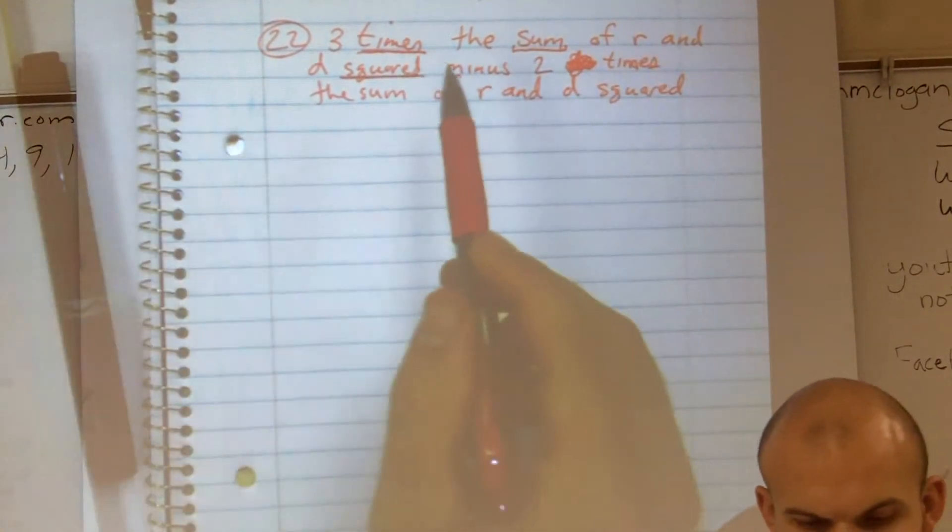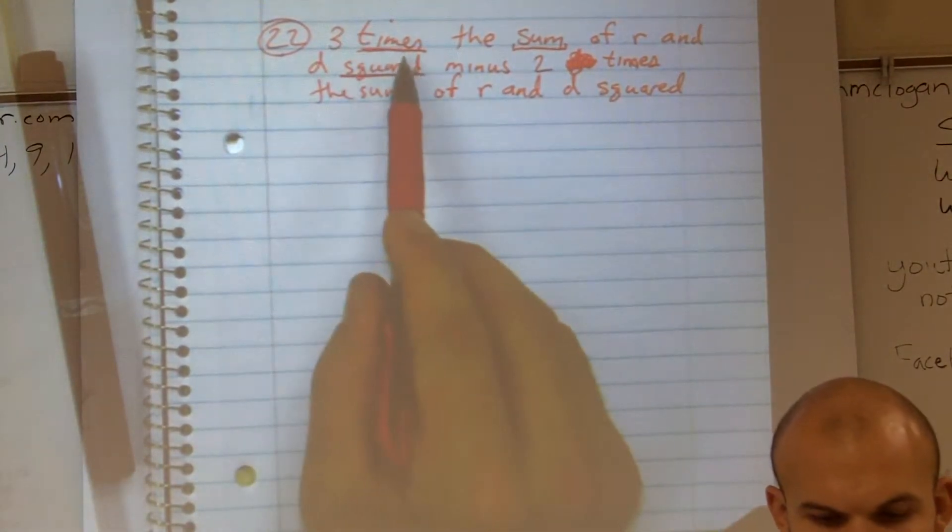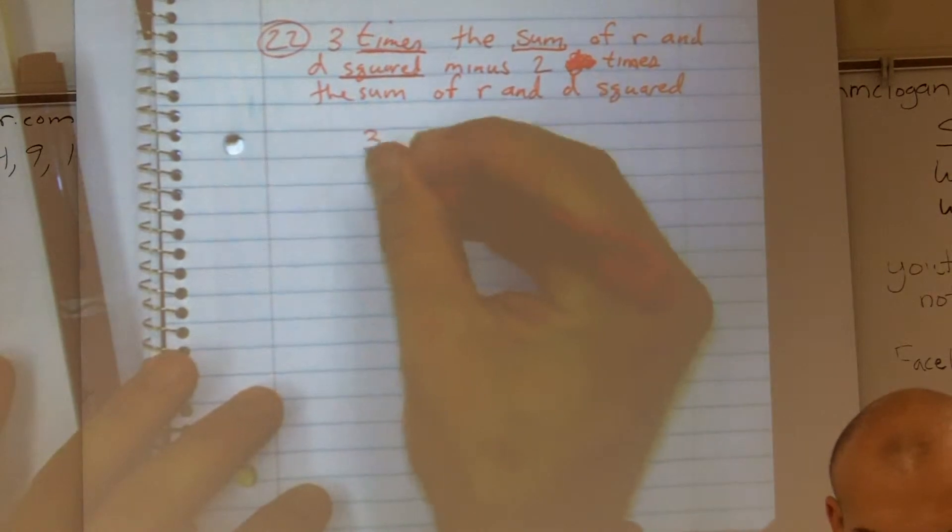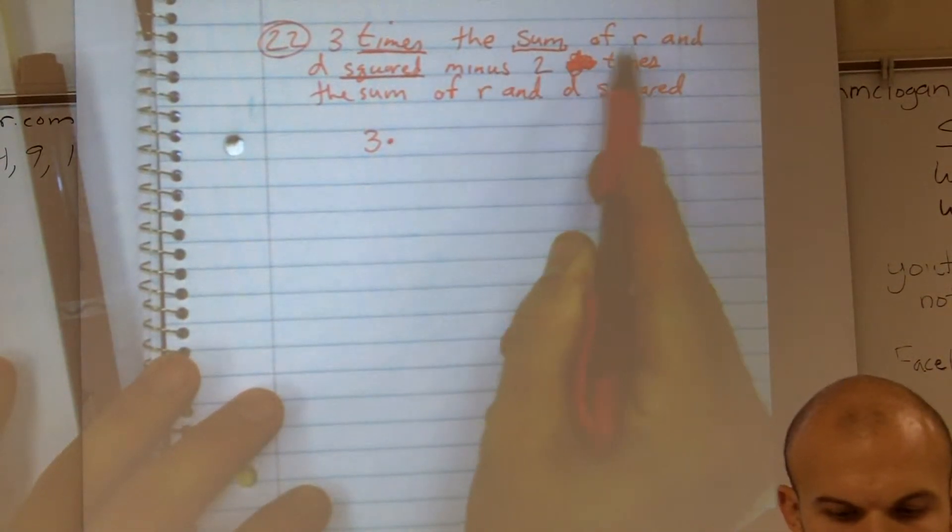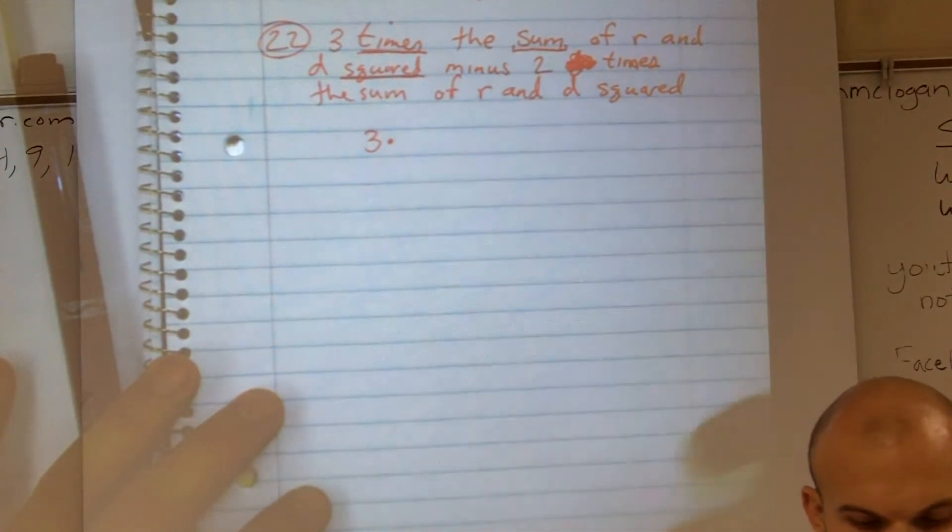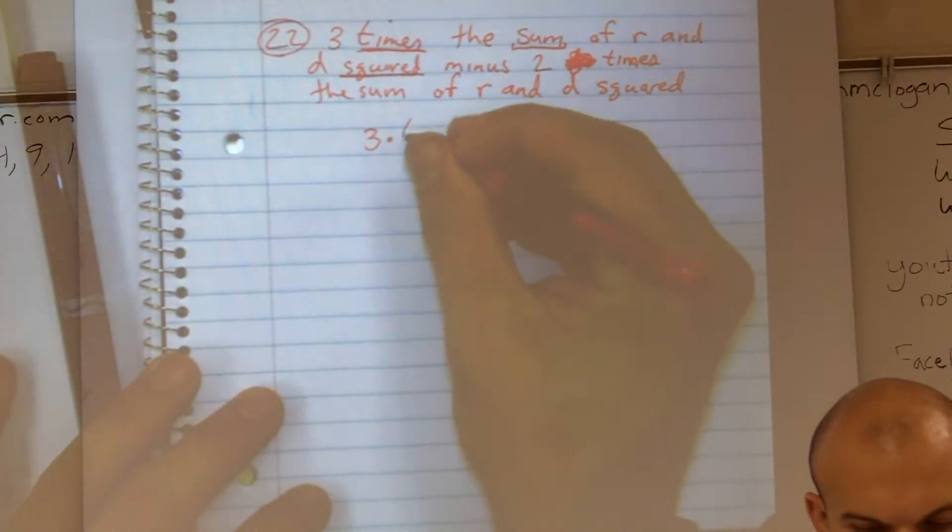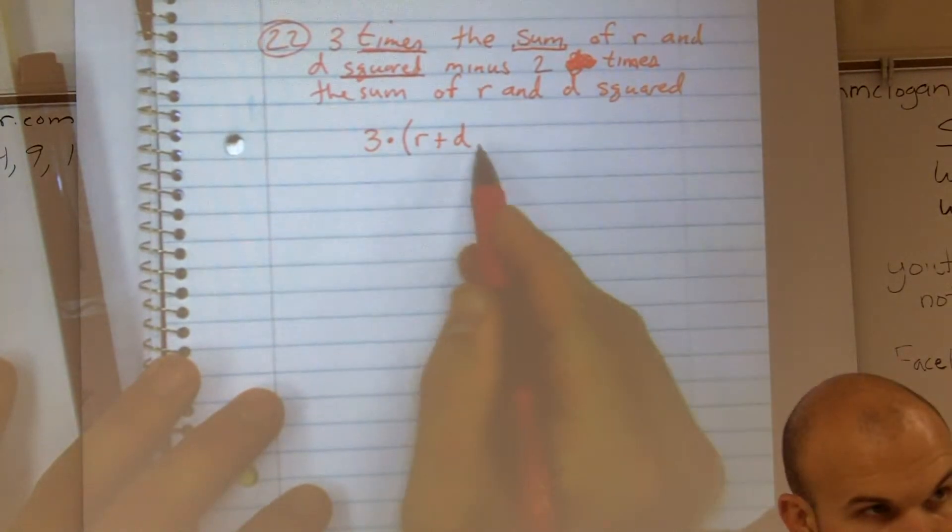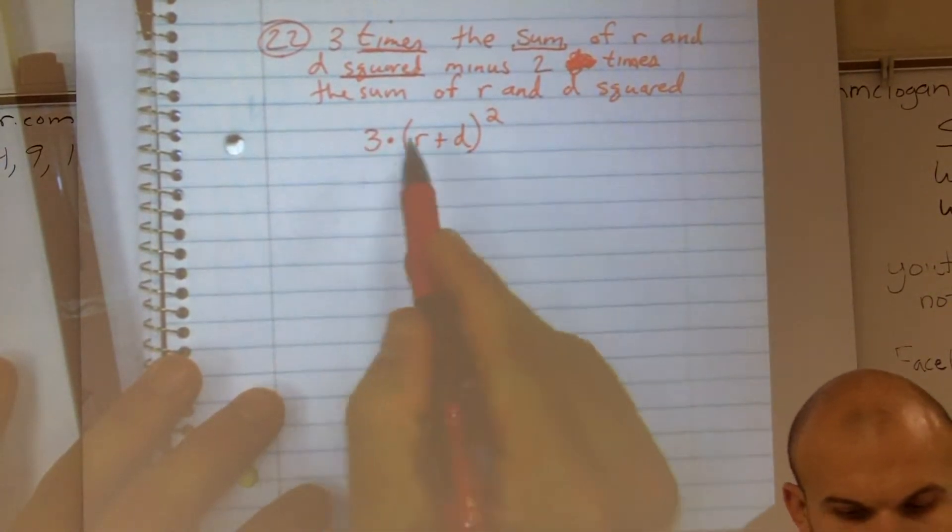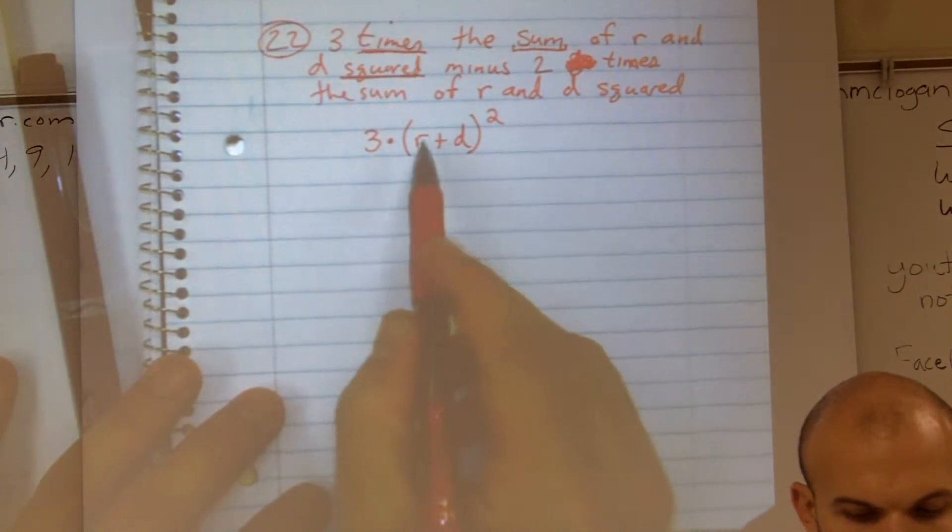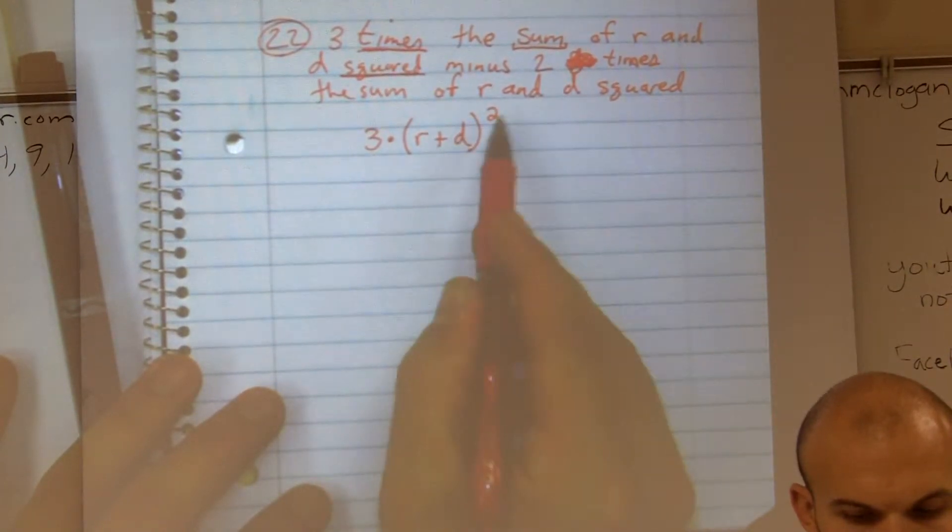So this is a long sentence. We have three times. So I'm going to multiply three times something. I'll put a dot there. Then it says the sum of R and D squared. So I'm going to put parentheses here, R plus D. That's the sum of those two. And then I've got to square them too. So it's three times the sum of R and D squared.